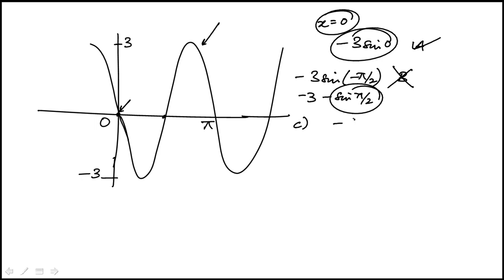c would be minus cosine of 0. Cosine of 0 is 1 again. So that's not 0. So c is out. d is 3 sine minus pi, which is minus 3 sine pi. This is going to be 0. So d is a possibility.